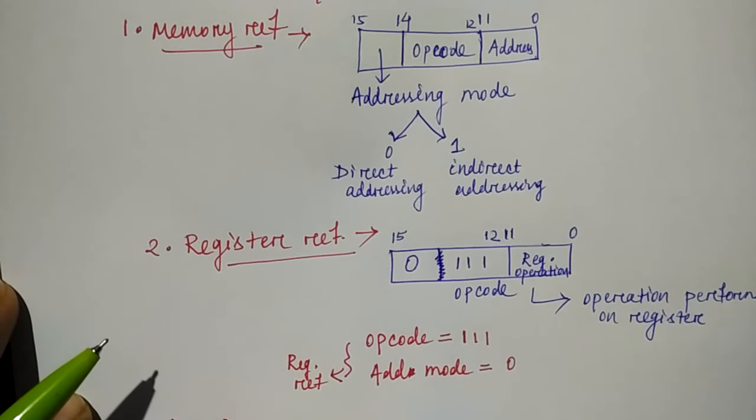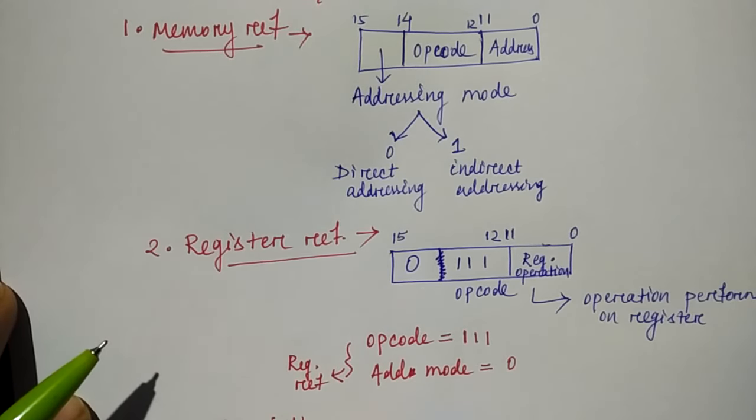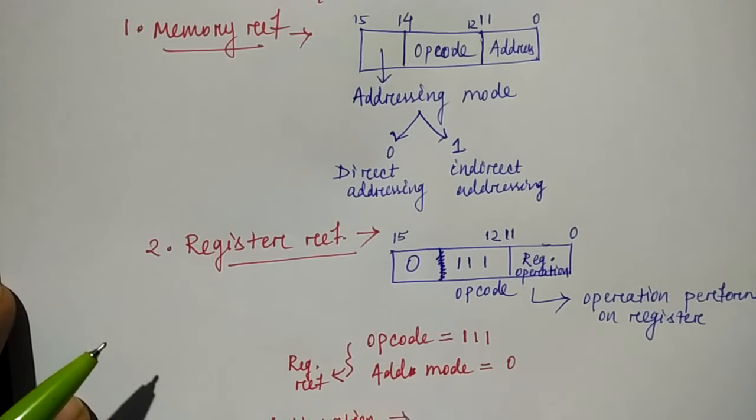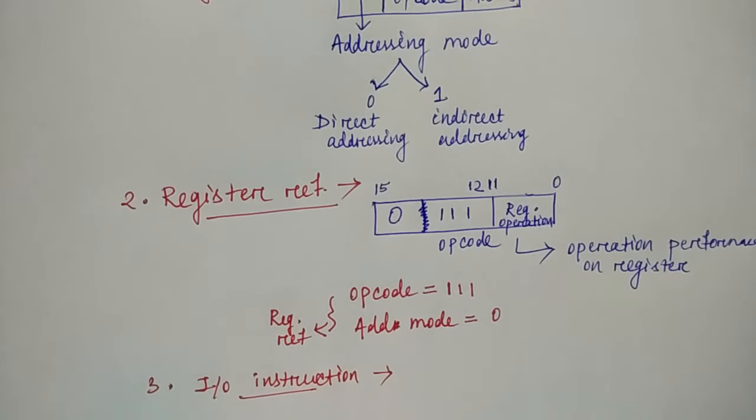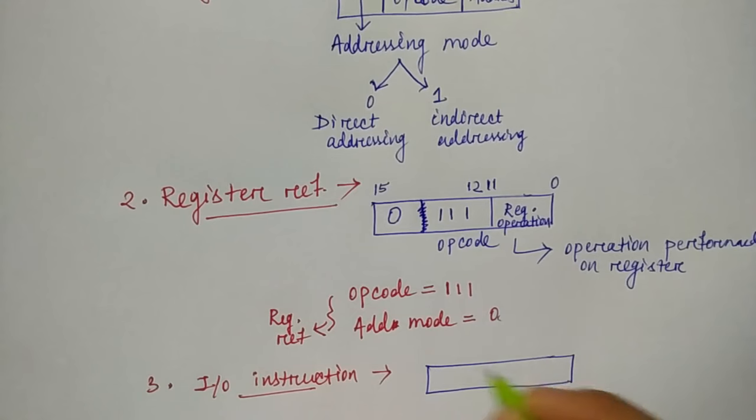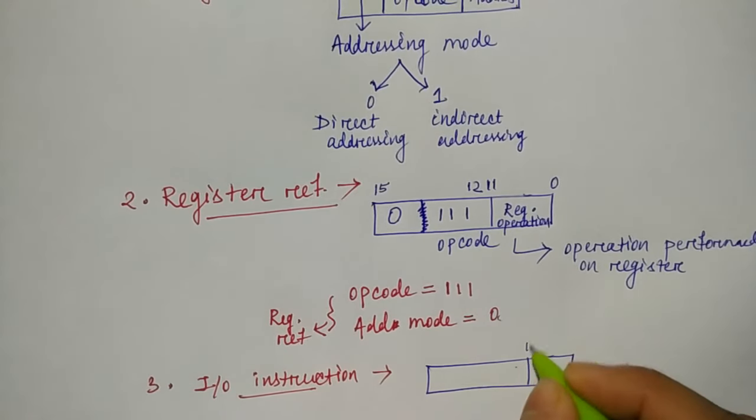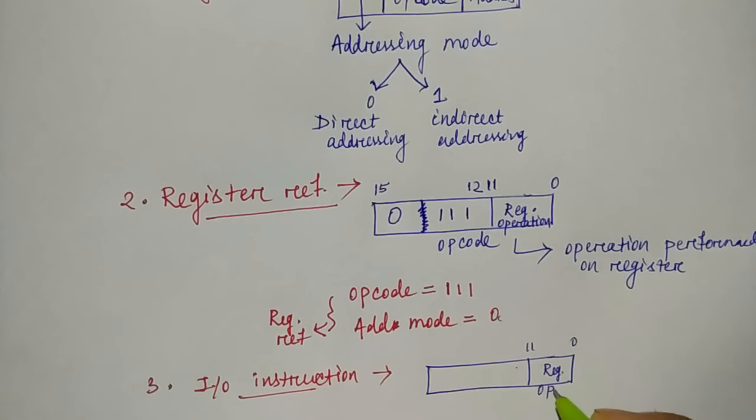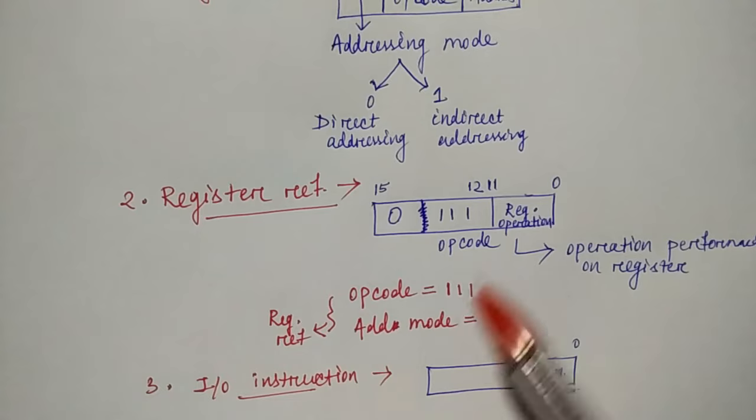Next comes the I/O instruction. These are the only formats. So here is the same thing. This is almost same as the register reference. This is your 11 to 0. Here will be the register operation present.